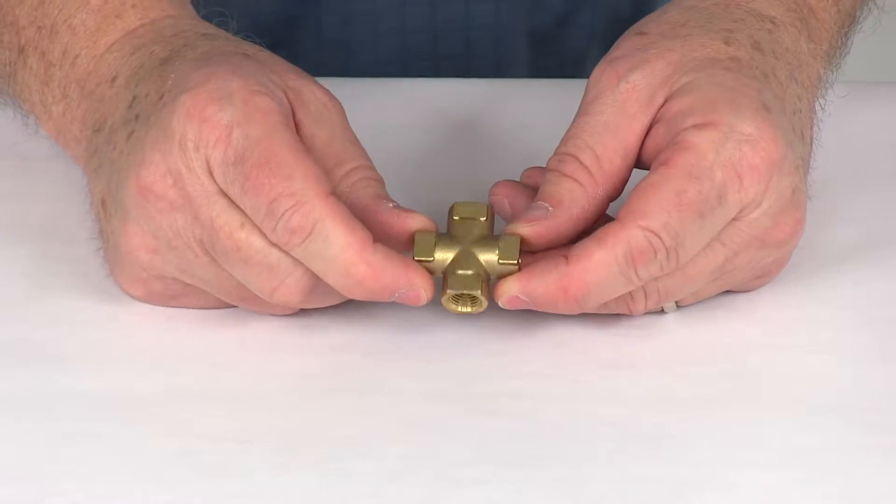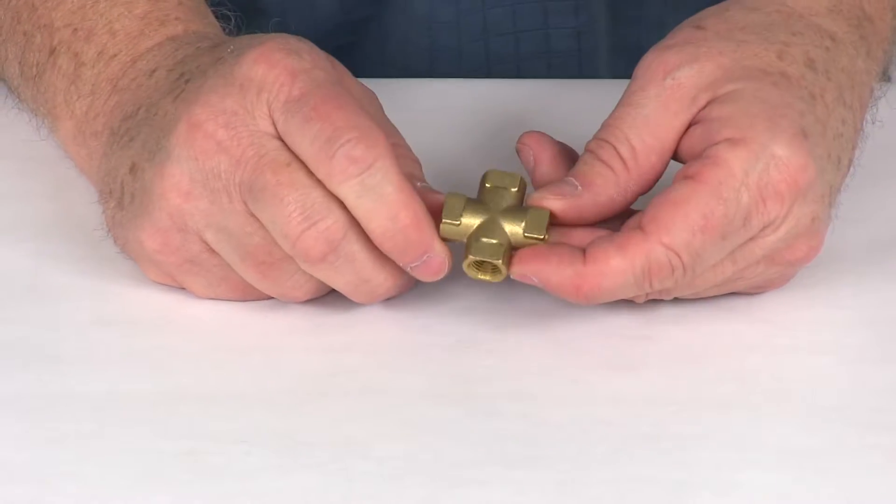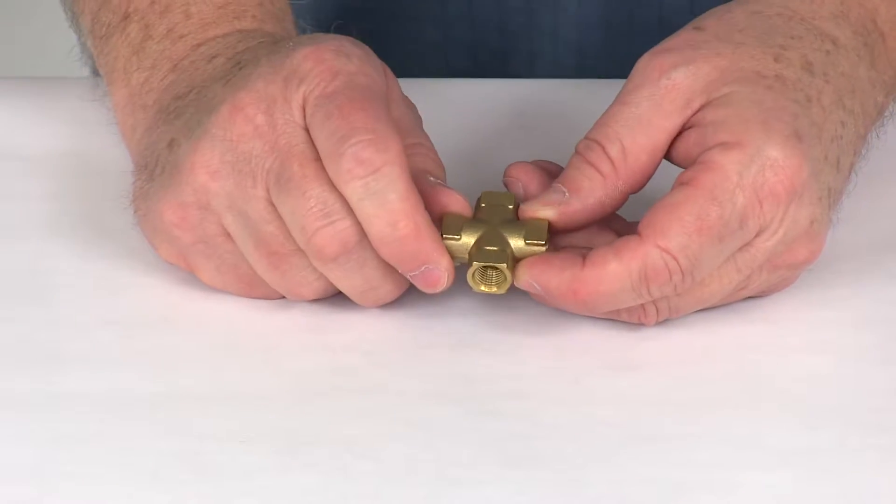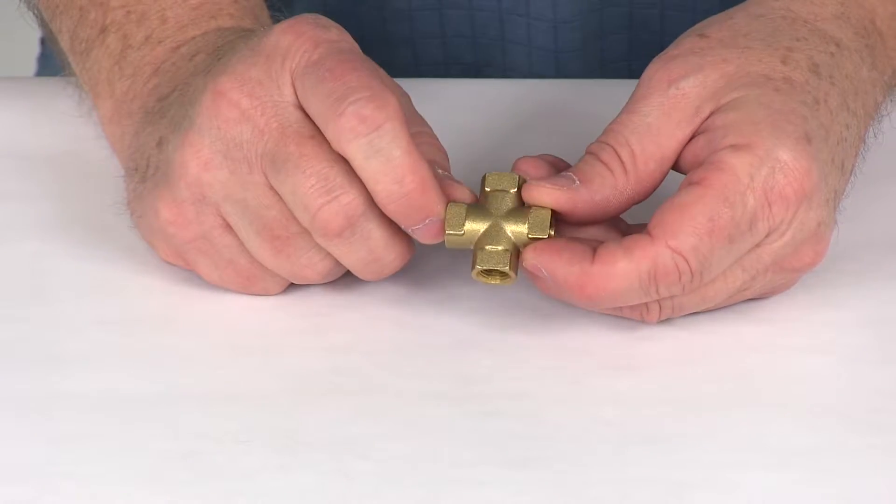Now this is a corrosion resistant cross fitting. It lets you connect the main hydraulic brake line with three other hoses. The cross fitting connects the four hydraulic brake lines in your hydraulic brake system. The brake lines we do sell separately on our website.